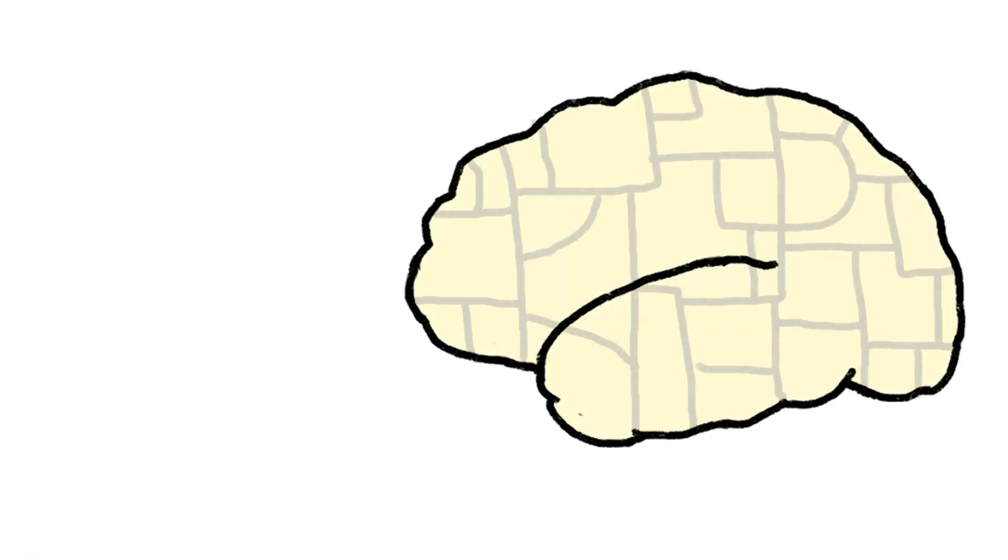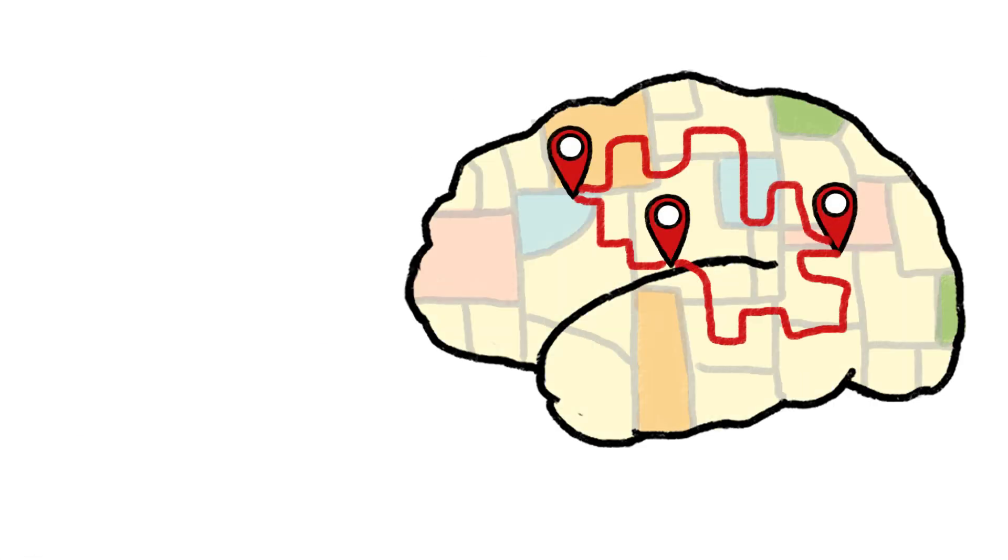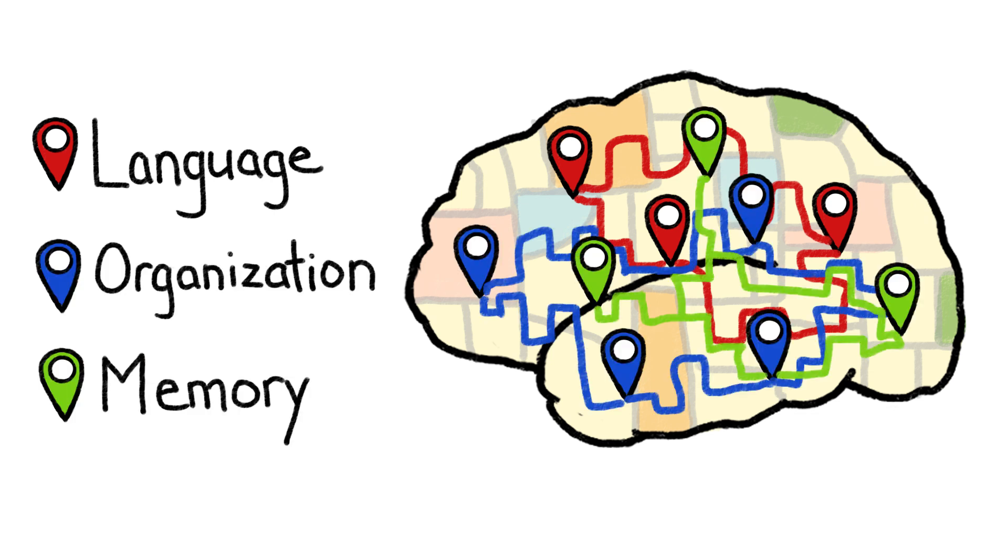As a result, we now have a map of the brain that shows which parts work together to help us do brainy things like understand language, solve puzzles, and remember stuff.